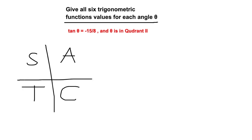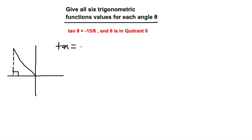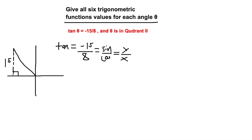Now we'll find the coordinates on the x and y plane. Theta is in the second quadrant, so we draw the line and a right triangle. We're given tan equal to negative 15 over 8. Tangent equals sine over cosine, which corresponds to y over x. So sine corresponds to y, and cosine corresponds to x. The y value is 15.